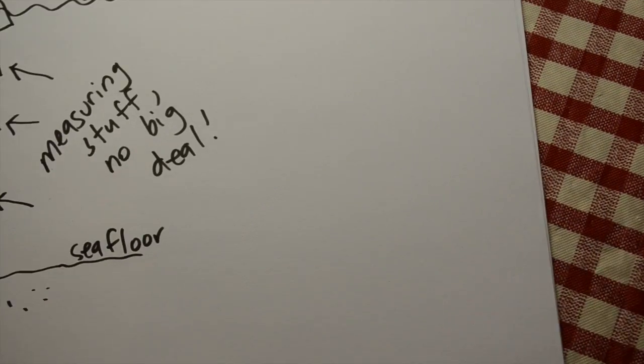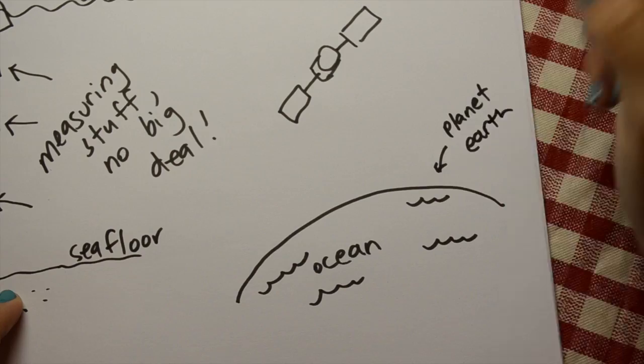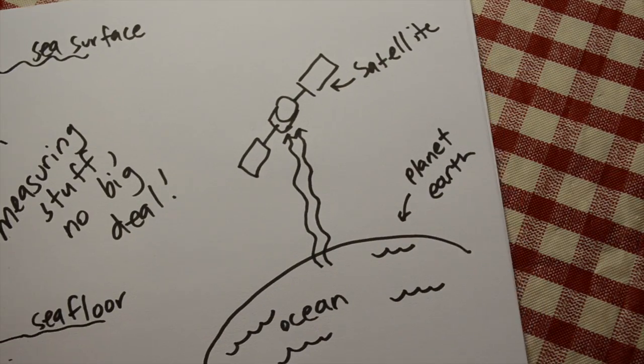You can also use satellites to take measurements remotely. Satellites measure radiation from the sea surface and those measurements can be used to estimate temperature and salinity.